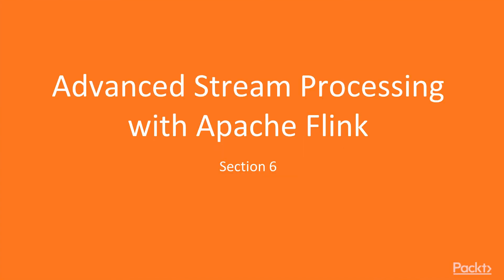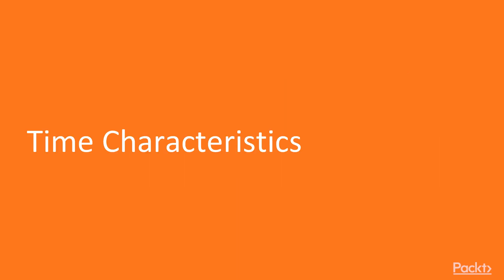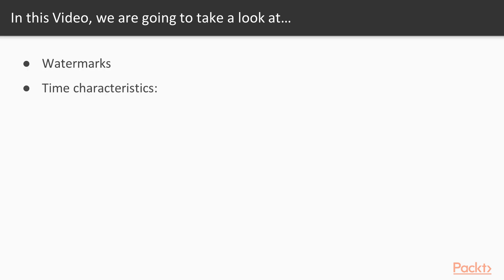In this section we will look at stream processing with Apache Flink time characteristics. In this video we will look at watermarks and time characteristics such as event time, ingestion time, and processing time.